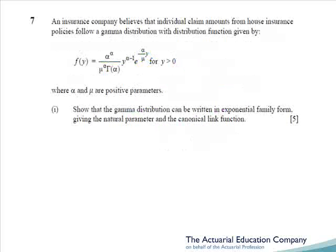Question 7 tests generalised linear models from chapter 10 of the notes. Once again, we're asked to show that a distribution is a member of the exponential family — in this case, the gamma distribution, which is exactly what was asked in September 2010 question 6, and April 2007 question 10. It's clearly a hot favourite. Given that there are only 5 distributions we're required to show are members of the exponential family, wise students will have practised all five, so this would have been an easy 5 marks.